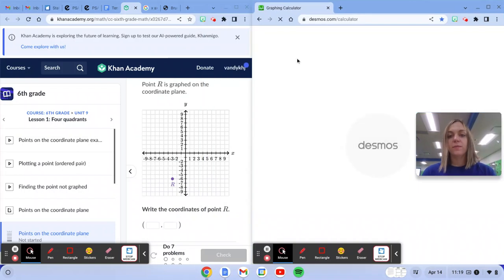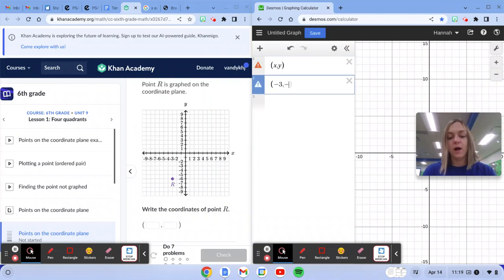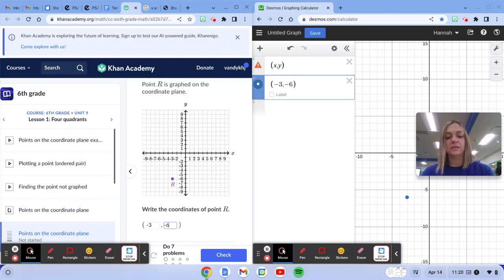Ordered pairs are always x, y, and we know x is negative 3, y is negative 6. So that's what we type in the box here.